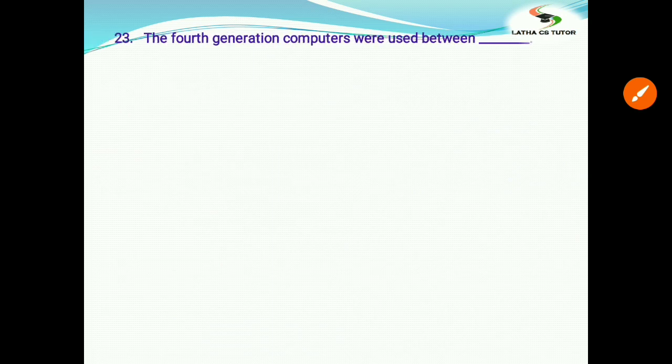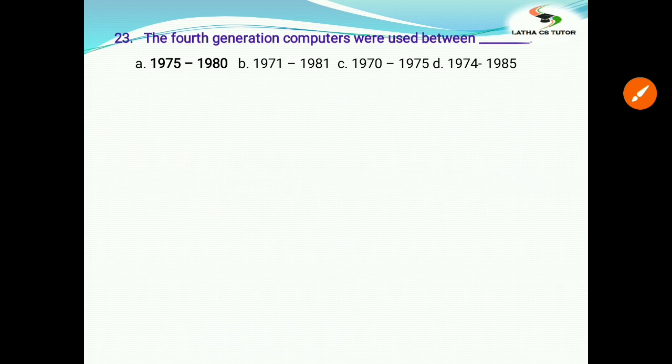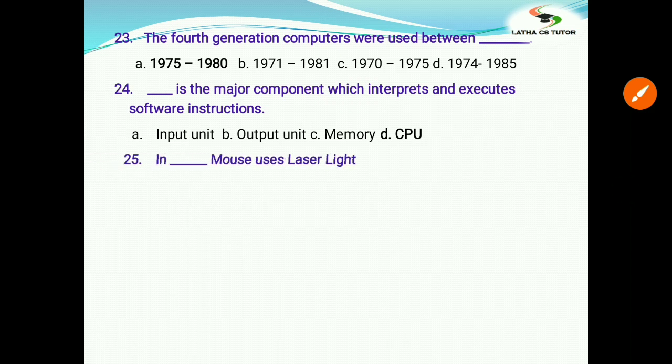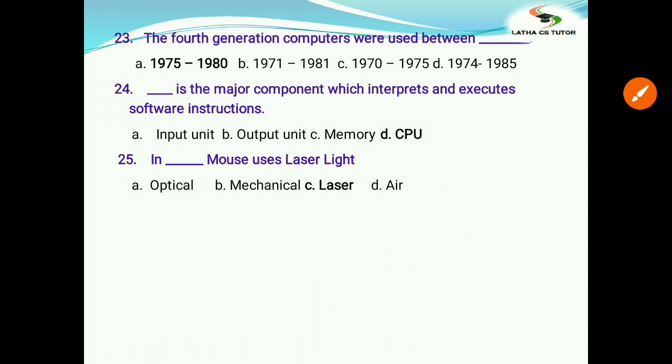The fourth generation computers were used between? The answer is A, 1975 to 1980. Blank is the major component which interprets and executes software instructions: a) input unit, b) output unit, c) memory, d) CPU. Normally CPU only interprets and executes because it consists of three units. It consists of ALU, control unit, and memory unit, so it does the processing and everything. In blank, mouse uses laser light. This is an easy question. We know the answer. It is option C, laser. Laser mouse only uses laser light.